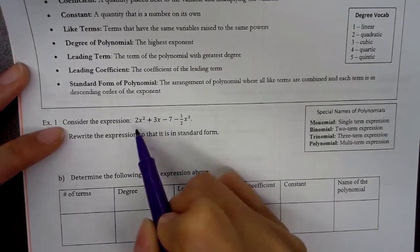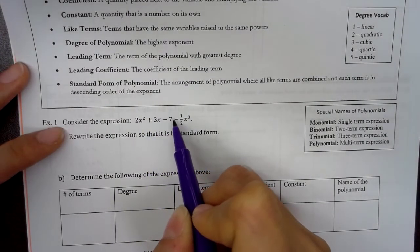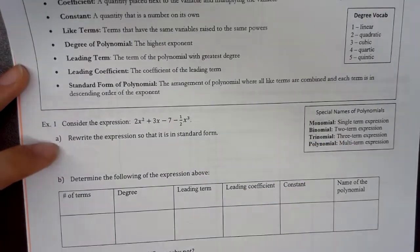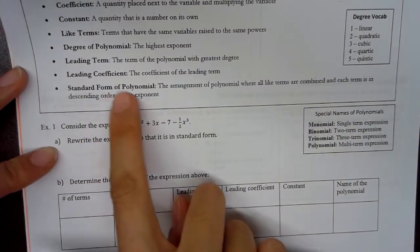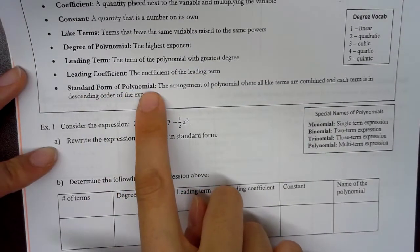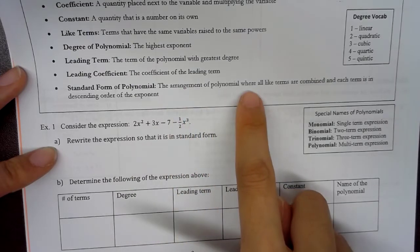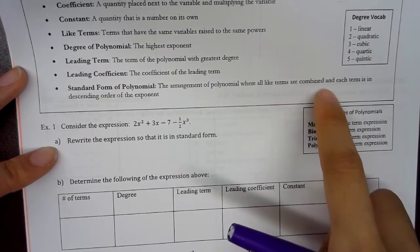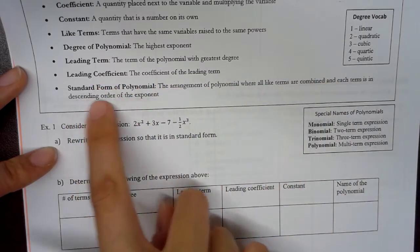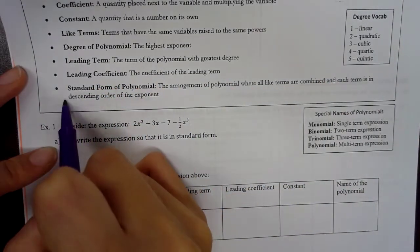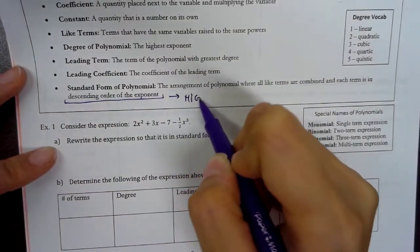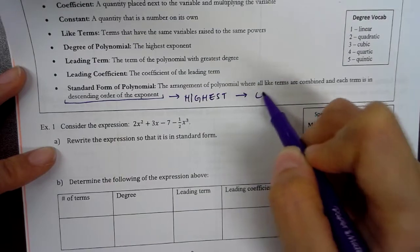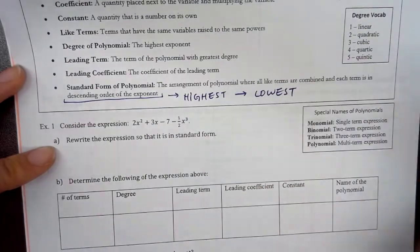Consider the expression 2x squared plus 3x minus 7 minus one-half x to the third. Part A: rewrite the expression so that it is in standard form. Let's take a look at what standard form means. Standard form of a polynomial is the arrangement where all like terms are combined and each term is in descending order of the exponent — from highest to lowest exponent.